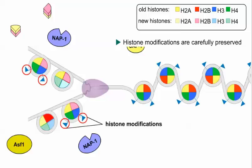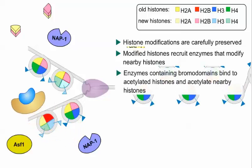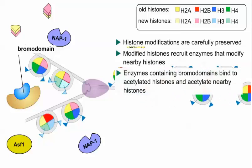Transmitting this histone modification information begins with the incorporation of the modified old histones into each daughter strand. These modified histones are in turn able to recruit enzymes that modify neighboring new histones in the same way. Enzymes containing specialized domains called bromodomains can bind to acetylated histones, and in turn acetylate neighboring nucleosomes.